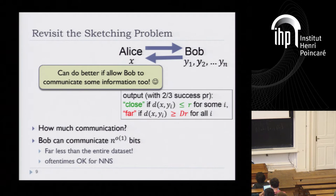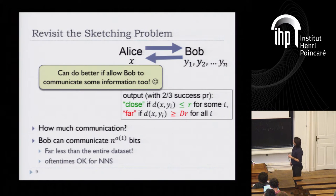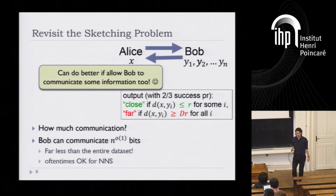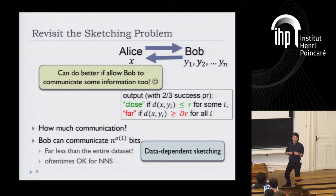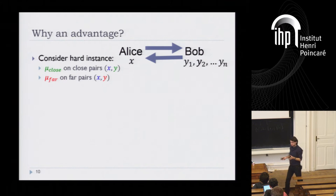Since I'm talking about this, the answer is yes — we can do better. The main question is why this should be possible. Many direct sum questions say that unless you communicate a lot about the database, it shouldn't be possible to solve the problem much better. Bob cannot communicate too much information about any particular Y, including the nearest one. The key intuition is: the way you prove sketching lower bounds when Bob has just one vector is that for far distributions, X and Y have to be correlated.